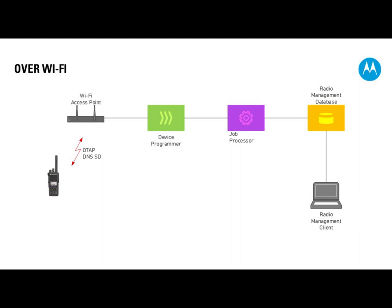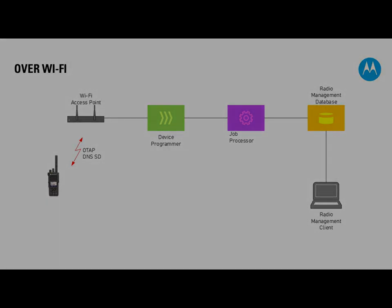The third possibility is to do configuration over Wi-Fi only. You have your database, job processor, and device programmer, but you're not using DDMS or MNES — because the connection between the Wi-Fi access point and the device programmer is purely IP. The radio does not use ARS on Wi-Fi; instead it uses DNS Service Discovery. When the radio switches on and connects to the Wi-Fi access point, it sends out a DNS-SD message. This is received by the device programmer, and if there are any jobs for this radio — OTAP jobs, firmware updates — they get sent over Wi-Fi.